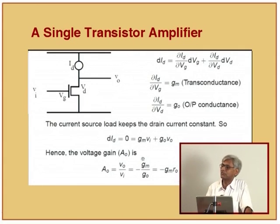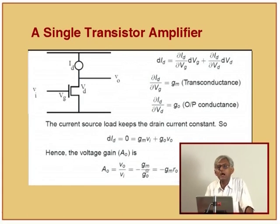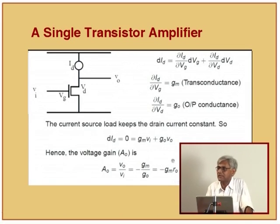Very often instead of talking of conductances, you talk of resistance. Instead of g0 you talk of r0, so the gain is minus gm times r0. This equation is very general - it applies to any device connected here and we will be using it throughout this lecture. This is the fundamental equation of amplification from which all things are derived.